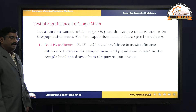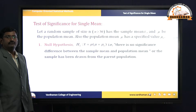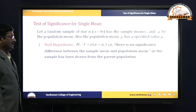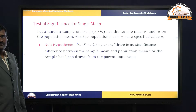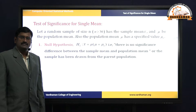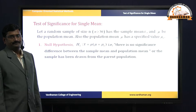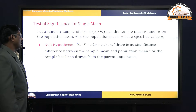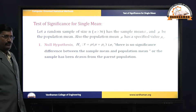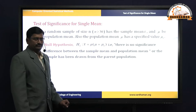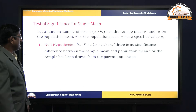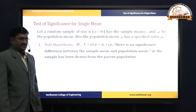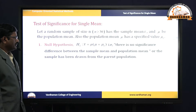To solve any single mean problem we should follow the working rules of hypothesis. There are six working rules: null hypothesis, alternative hypothesis, level of significance, test statistics, critical value, and conclusion. The null hypothesis is written as H0: x-bar = mu, or alternatively mu = mu-naught, meaning there is no significant difference between sample mean and population mean, or the sample has been drawn from the parent population.